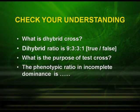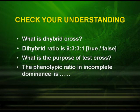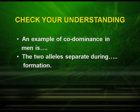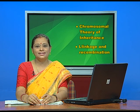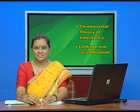Now try this to check your understanding: What is a dihybrid cross? The dihybrid ratio is 9:3:3:1 — true or false? What is the purpose of a test cross? The phenotypic ratio in incomplete dominance is? An example of co-dominance in man is? And — the two alleles separate during gamete formation. That is all for today. In the next episode, we are going to discuss Chromosomal Theory of Inheritance, Linkage and Recombination. Thank you.